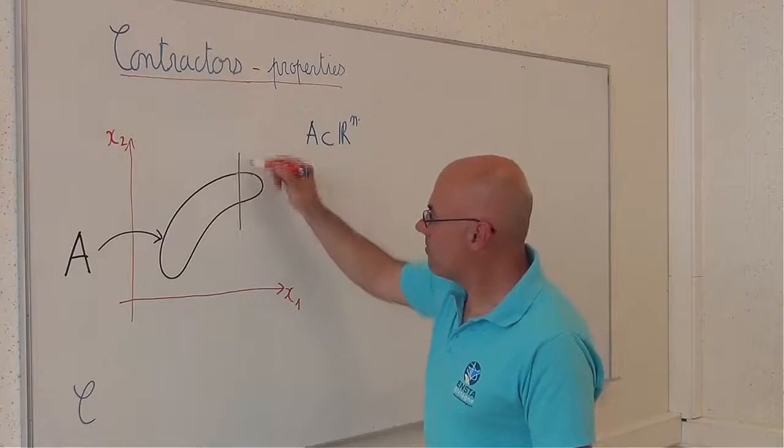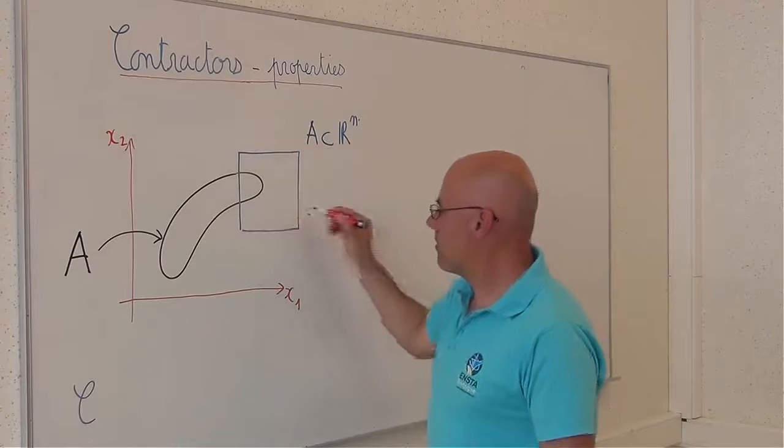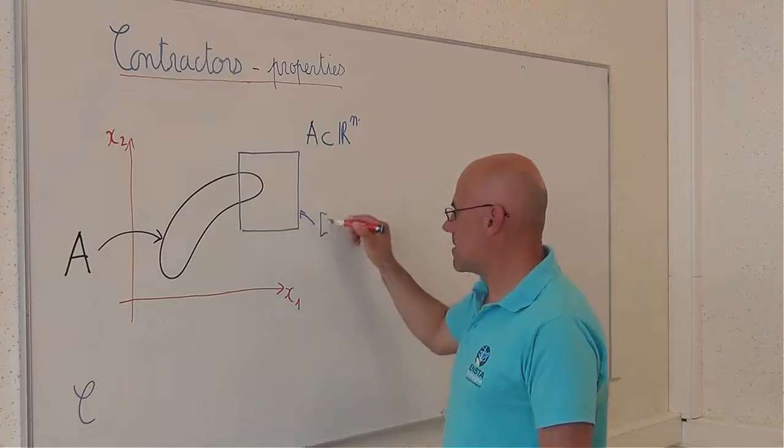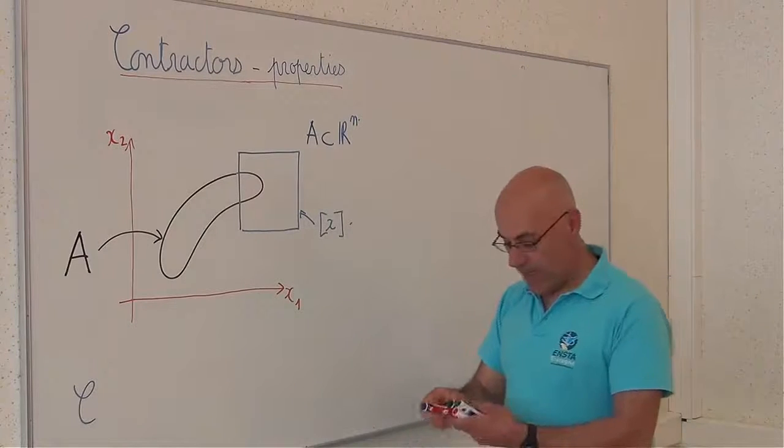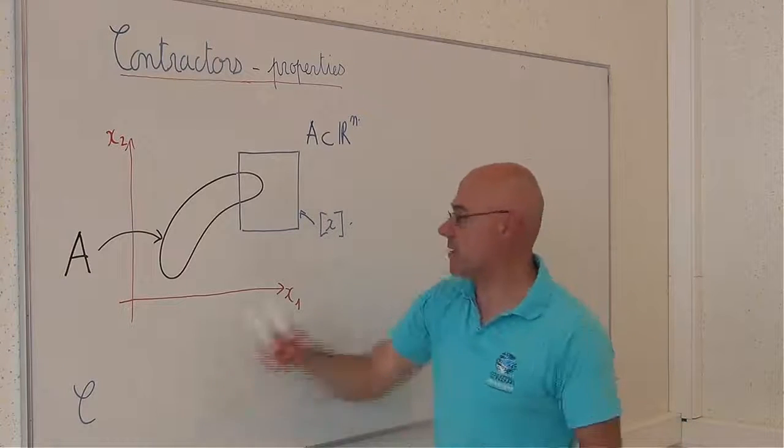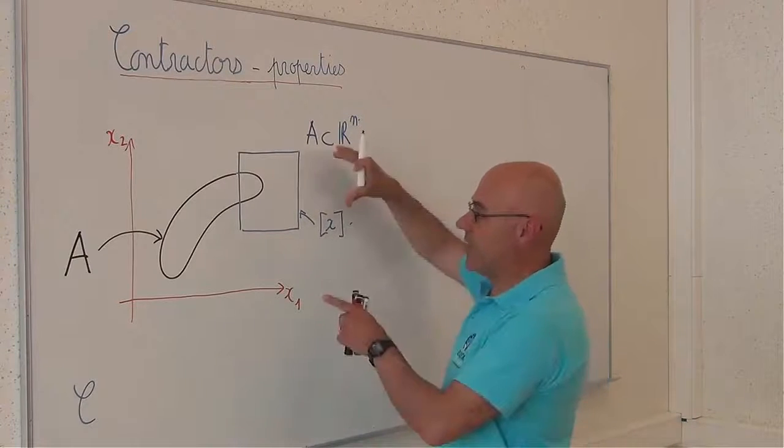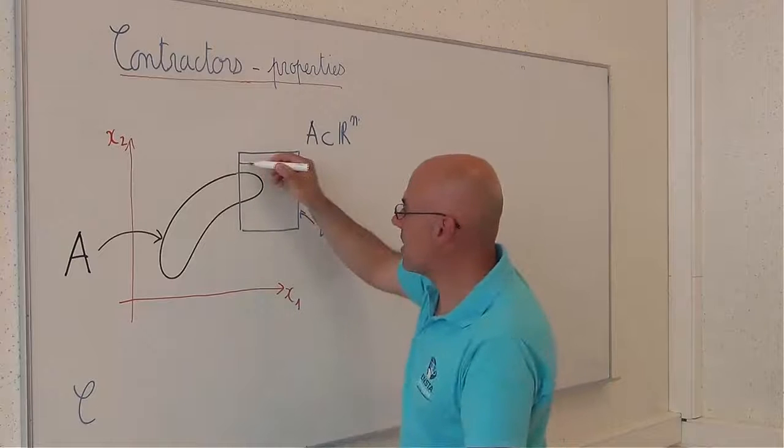Consider now a box X. If I apply a contractor C on X, I will obtain something smaller, for instance, like this.